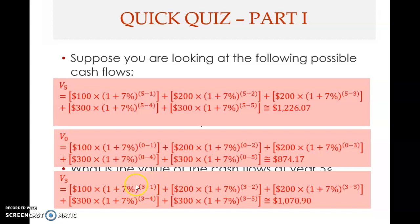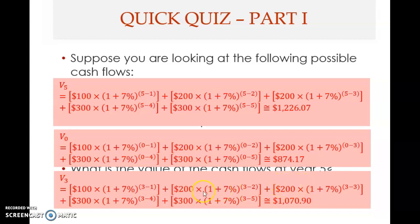This means you compound over two years, because the cash flow is at the end of the first year and you need the value at the end of three years — so you compound twice to reach the third year. The cash flow at the end of year two you compound over one year, since three minus two equals one. The cash flow at year three: three minus three equals zero, so you neither compound nor discount.